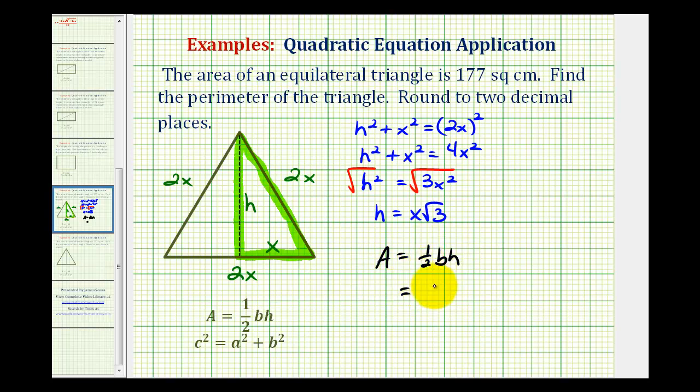So for this situation, we're going to have 1 half times the base, which has a length of 2x, times the height expressed in terms of x, which is x square root 3. And this must equal 177 square centimeters.